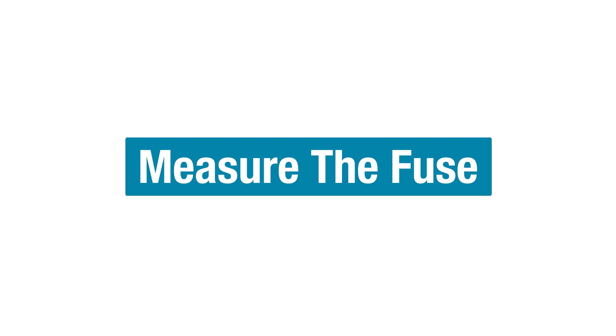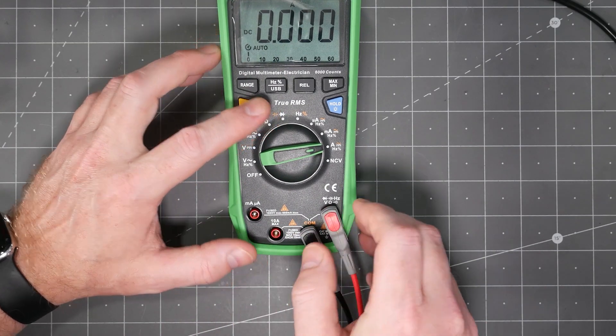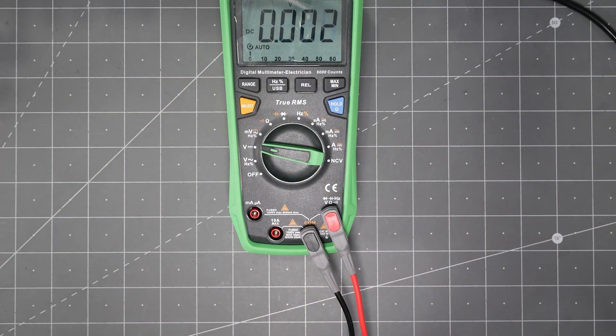For the first tip, let's cover what to check when current measurements are not working. As I have said in the past, whenever you are done with a current measurement, immediately move the lead back to the voltage terminal. Even if you think you're going to make another measurement, move it anyway. Otherwise, you will eventually blow the fuse.